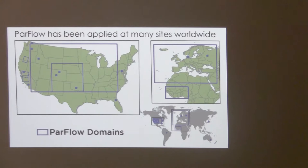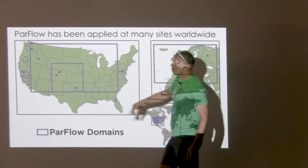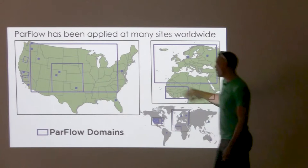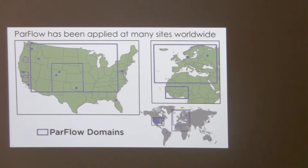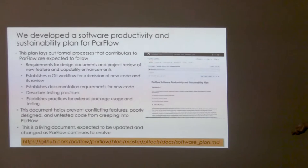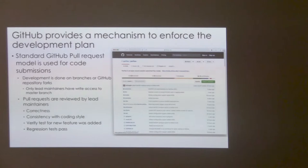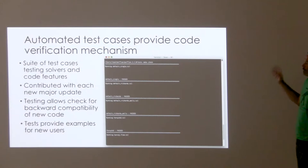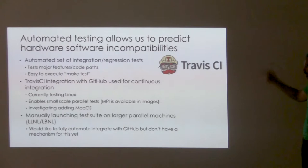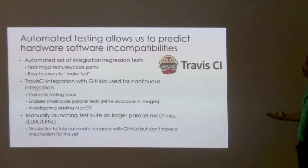If we think about the PARFLOW domains, we have a worldwide approach. Some of these domains are incredibly small and high resolution; some are coarser resolution but continental scale. We really try to use the same physics to bridge these scales. We have a software productivity plan — everything's on GitHub. We have a whole series of active branches in development. We can walk through how to pull it, and we have a copy of the GitHub repo. We have automated tests and a full suite of regression tests running in Travis CI that are constantly doing regression tests, so we're using a lot of these standard approaches.